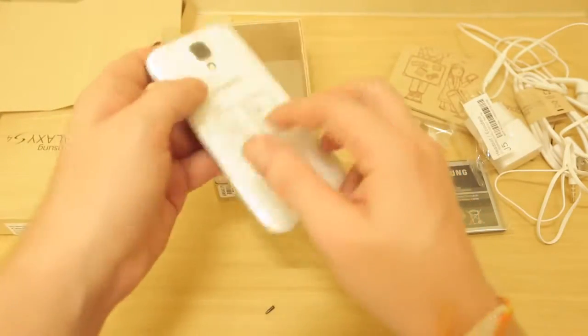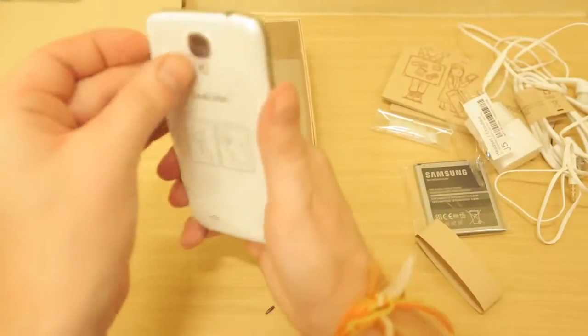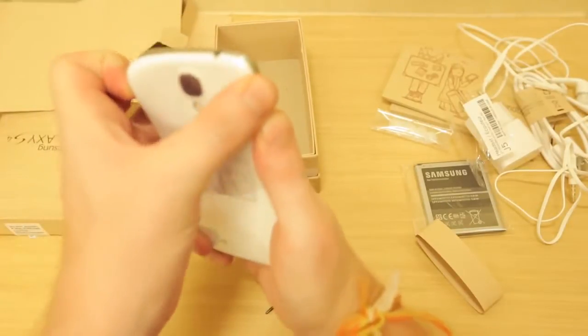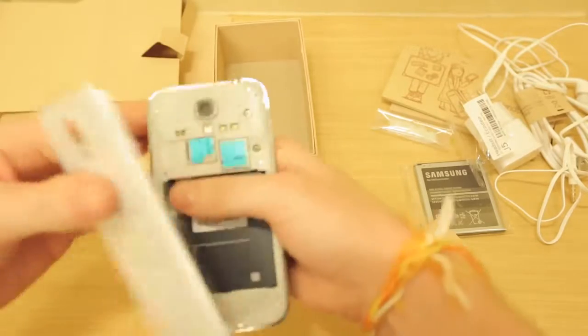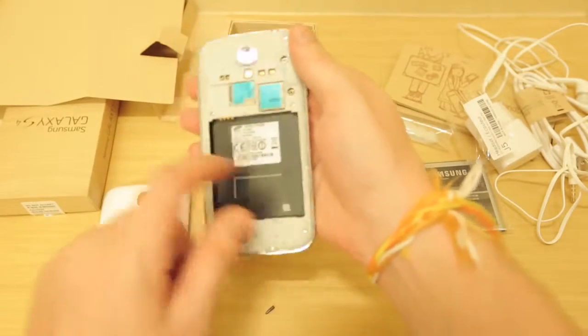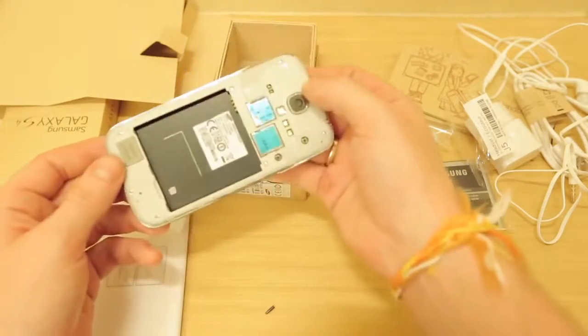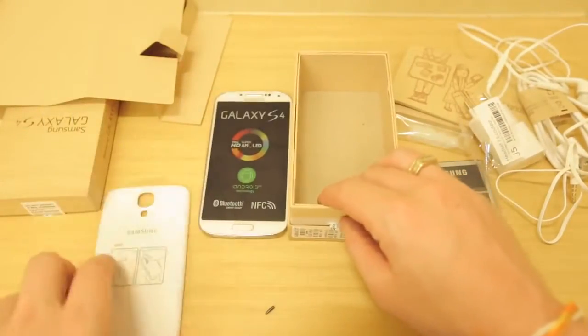So here we are taking a closer look. Let's just open it up at the back here. Should take my plastic off there. Either way guys, that's where the battery is going to go. Obviously we have the memory card and the micro SIM slot. We have a speaker here in the rear. So that's what we're looking at for the Galaxy S4.